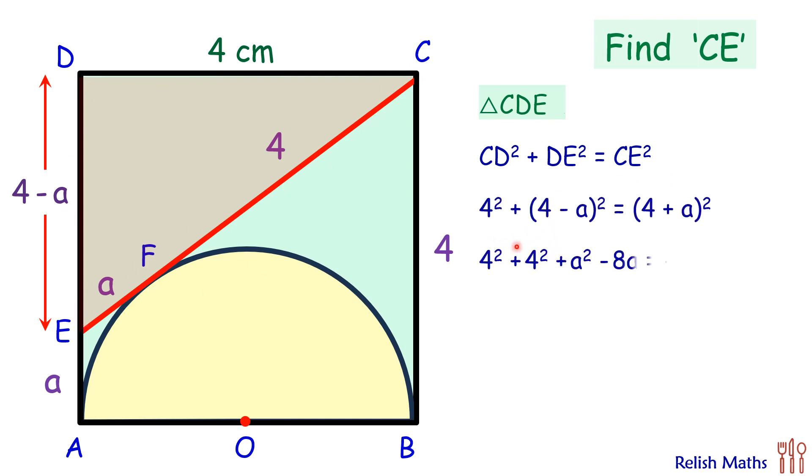Opening the brackets and solving it on both sides, 4 squared on both sides will get cancelled, and a squared will also cancel. Simplifying it further, taking a on one side, we will get 16 equals 16a, or a is 1.